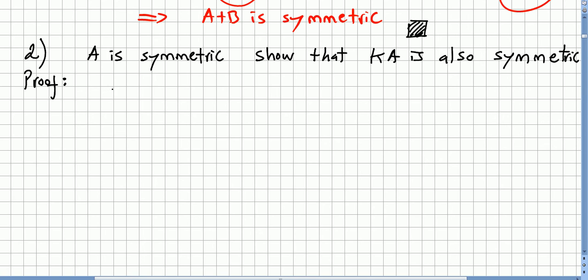So what is kA? kA will be a matrix c_ij. But we know that c_ij results from the multiplication of k by a_ij.